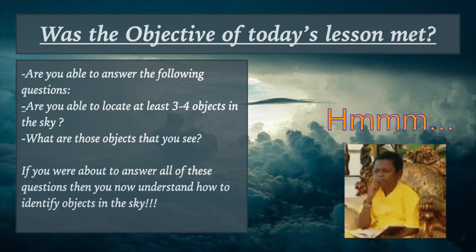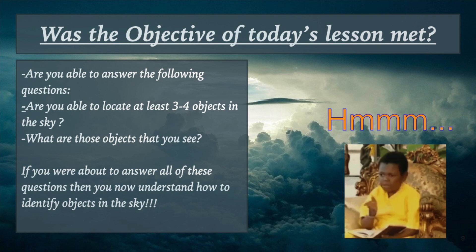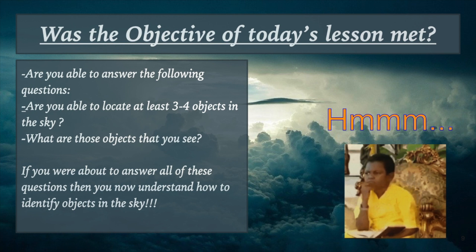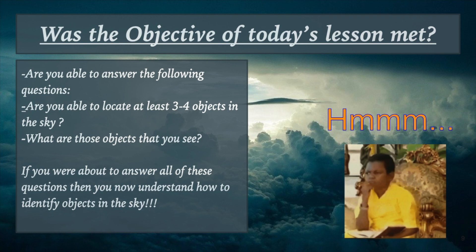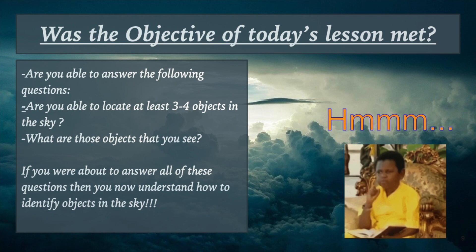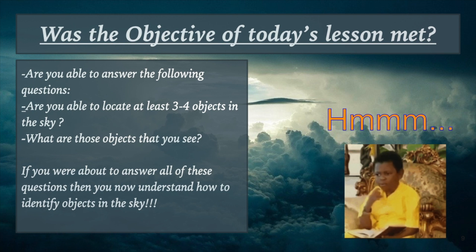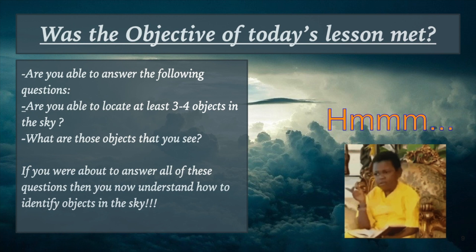We've gotten to that time of the lesson where we're going to think back to what our objective was. Was the objective of today's lesson met? Are you able to answer the following questions on the slide? Are you able to locate three to four items in the sky by simply stepping outside your front door right now or looking out the window? If you're able to do this, tell your sibling, parent, or somebody in your house three or four things you could see in the sky. You don't have to write it down, but next week on the call I'm going to be asking a couple friends to tell me some objects they might have seen in the sky. If you're able to tell me three to four objects in the sky that you can identify, then you've met the objective of this lesson.